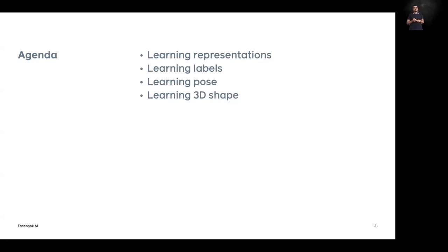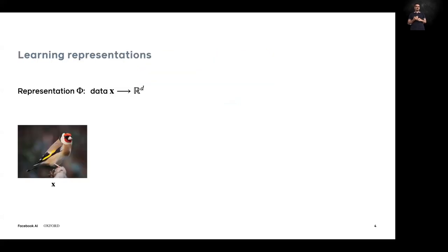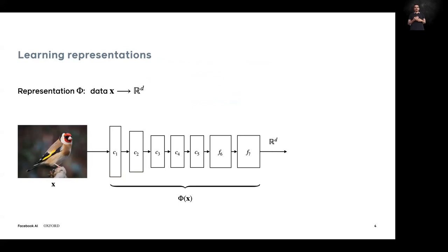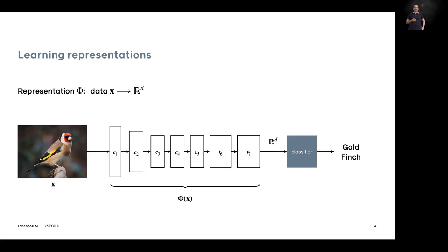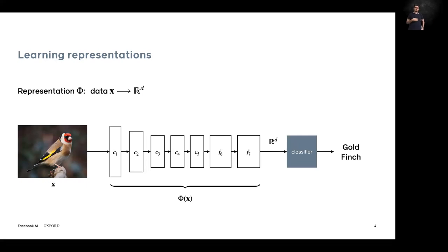We'll start from the first topic: learning representations. A representation is a function applied to an image or video that maps it to a high-dimensional vector, typically implemented as a deep network. The goal is to provide a vector useful for solving a task of interest — for example, classifying an image to a label like 'goldfinch'. When you have supervision you use labels as a training signal, but without labels you design a pretext task that generates data cheaply and still pre-initializes the network weights.